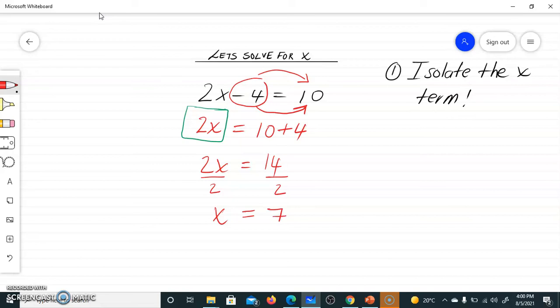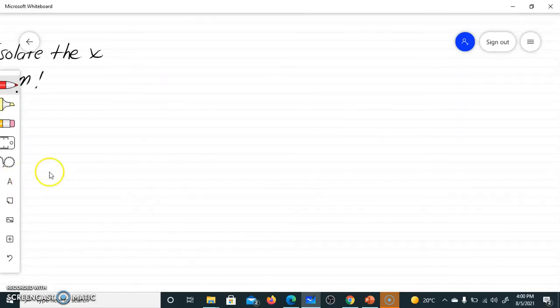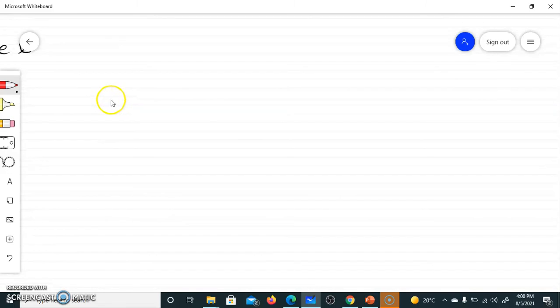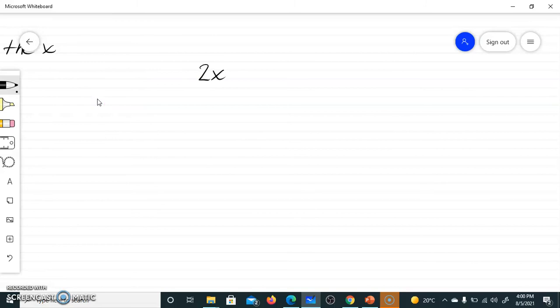Or, a different method as well. Another method you can use to solve for x is, this is just the same thing but differently. So if you're given 2x minus 4, which is equal to 10, what do we need to do? We said we need to isolate the x term. This is the x term. We need to isolate it.